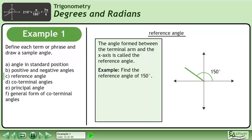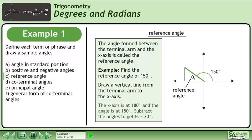As an example, we'll find the reference angle of 150 degrees. We can find the reference angle by drawing a vertical line from the terminal arm to the x-axis. The x-axis is at 180 degrees and the angle is at 150 degrees. Subtract the angles to get the reference angle of 30 degrees.